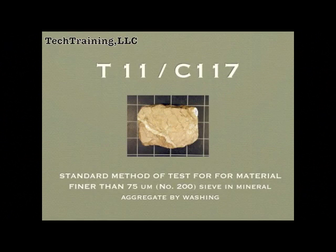AASHTO T11 and ASTM C117 are the standard method of test for materials finer than the 75 micron or number 200 sieve in mineral aggregates by washing. This method is used to determine the amount of fine material in concrete aggregates.